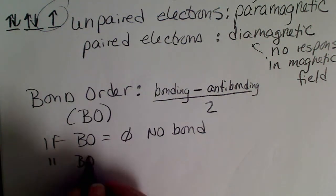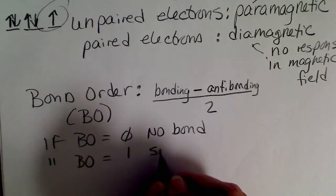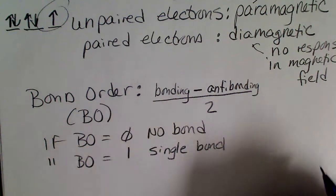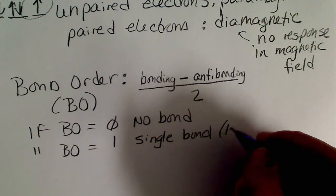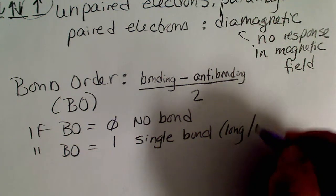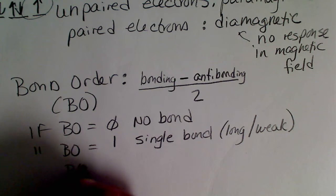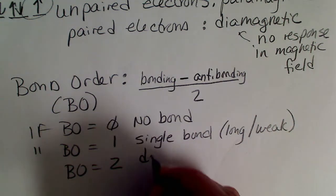If the bond order equals one, that means a single bond. A single bond is the longest bond and it's the weakest. That's a long, weak bond. If the bond order equals two, that's a double bond.